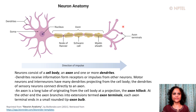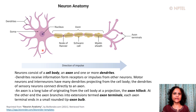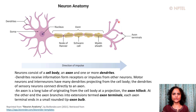The dendrites receive information from receptors or impulses from other neurons. Motor neurons and interneurons have many dendrites projecting from the cell body. The dendrites of sensory neurons connect directly to an axon. An axon is a long tube originating from the cell body at a projection referred to as the axon hillock. At the other end, the axon branches into extensions termed axon terminals, and each axon terminal ends in a small rounded axon bulb.